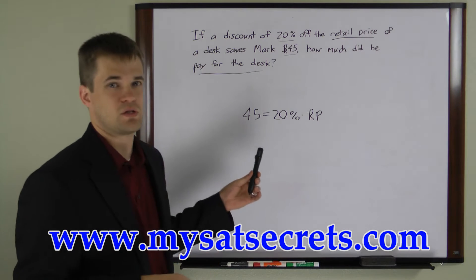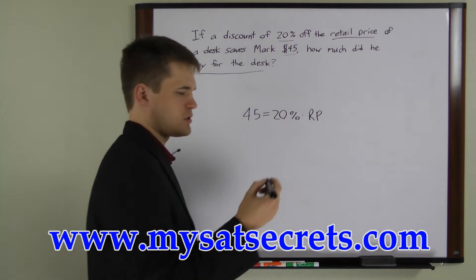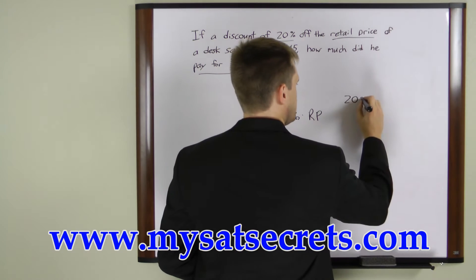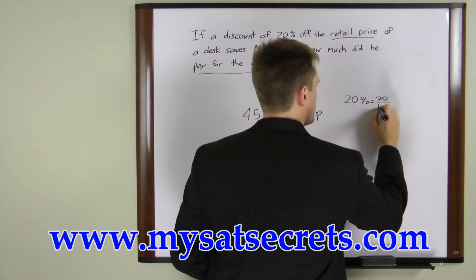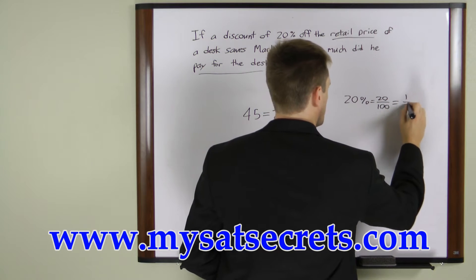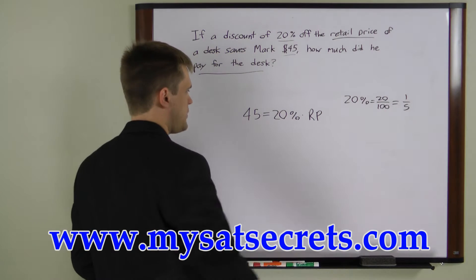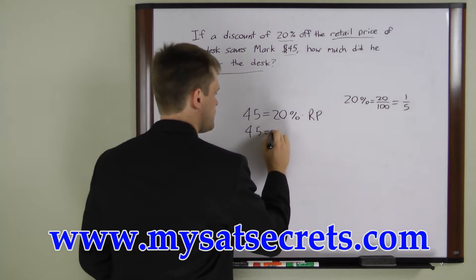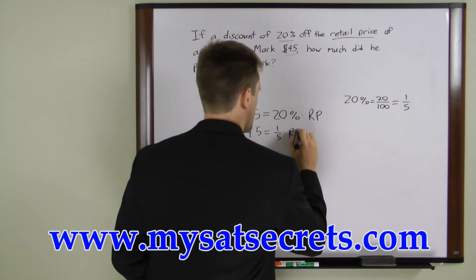To solve this equation, we want to convert the percentage to a fraction. 20% equals 20 over 100, which is the same as 1 over 5. Substituting that back into the equation gives us: 45 equals one-fifth times the retail price.